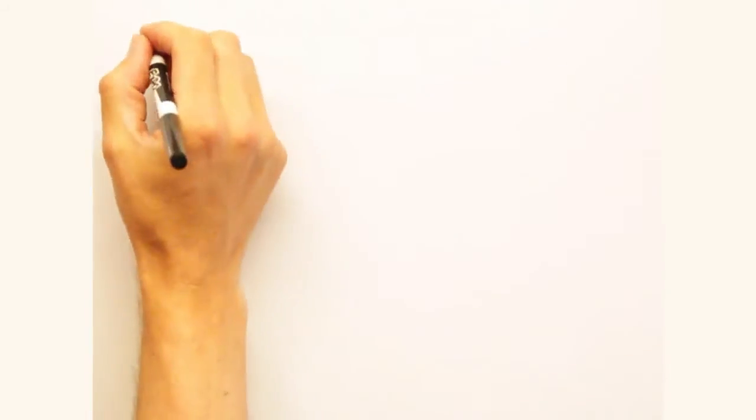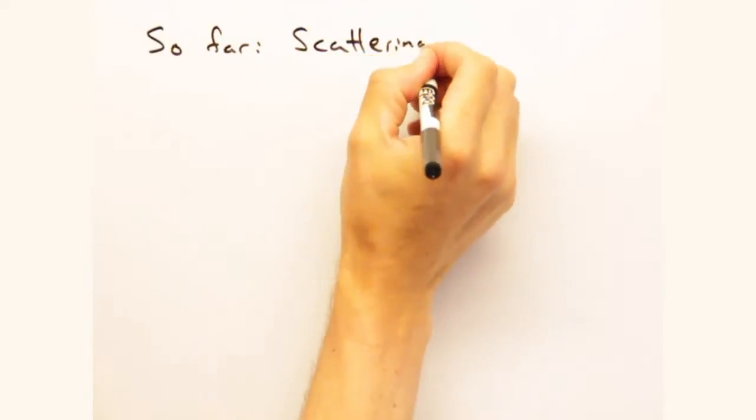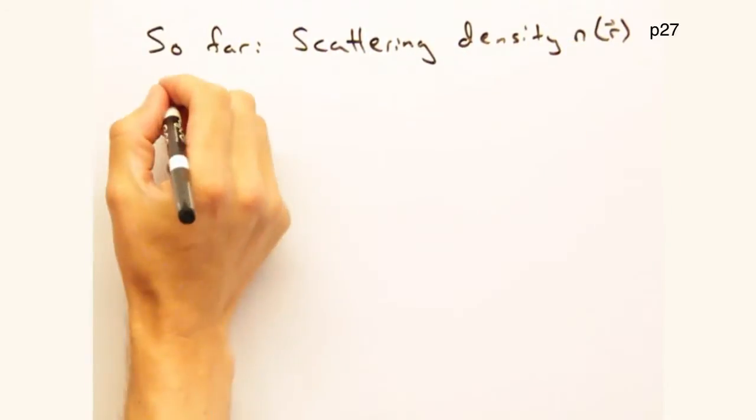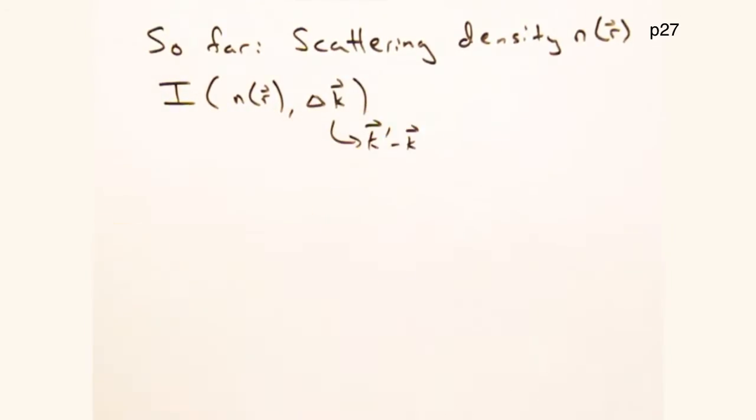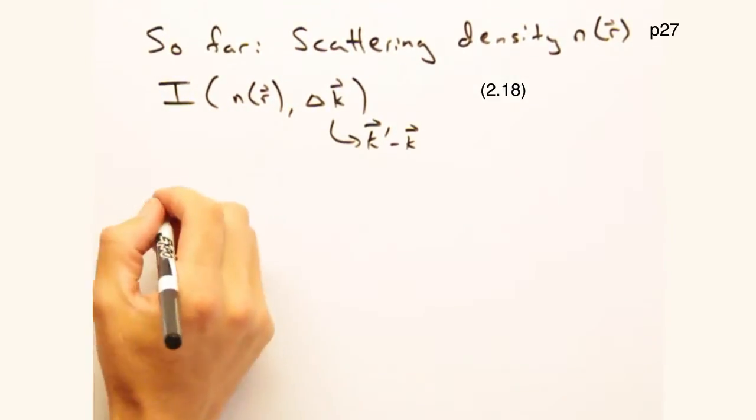Today we're going to take a closer look at our scattering density n of r. Last time we looked at elastic diffraction and developed an expression for the intensity at our detector that depended on n of r and the change in our wave vector k.